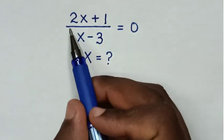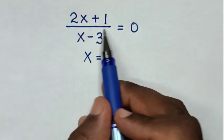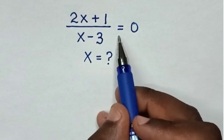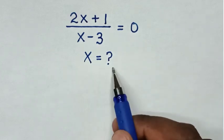Hello! How to solve 2x plus 1 over x minus 3 is equal to 0 to find the value of x.